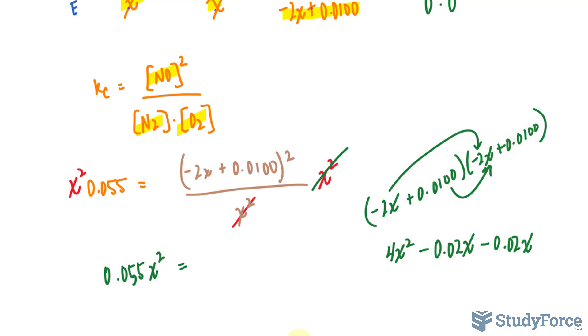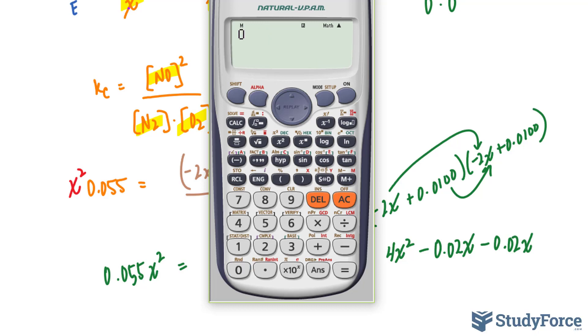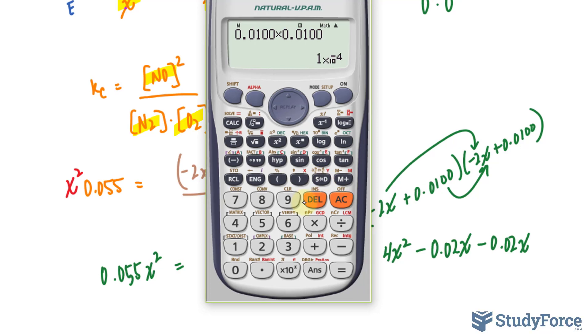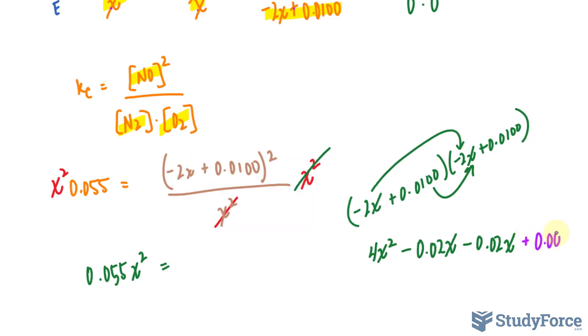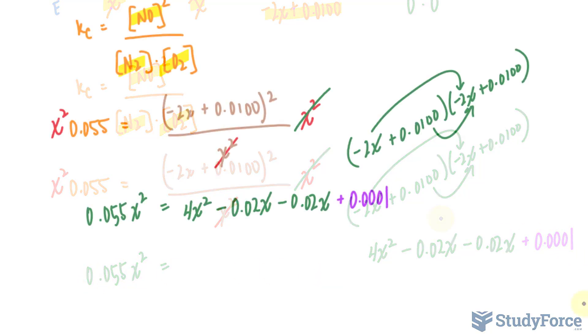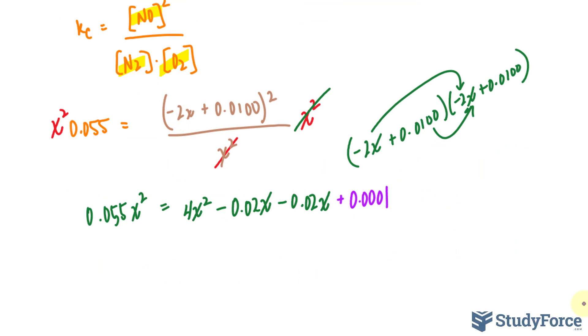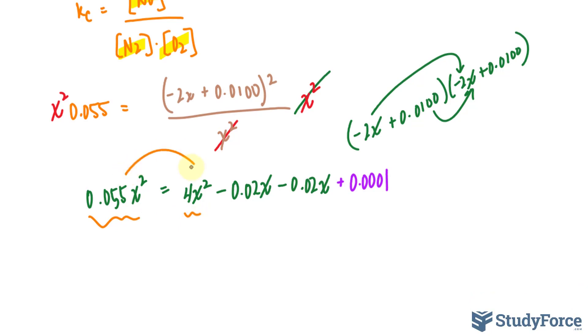This number times that number. 0.0100 times itself gives us plus 0.0001. All of this will go on the right side of our equation. Now we'll combine like terms. And as you can see, we have terms in our equation that are of second degree. This means that we'll be using the quadratic formula shortly.